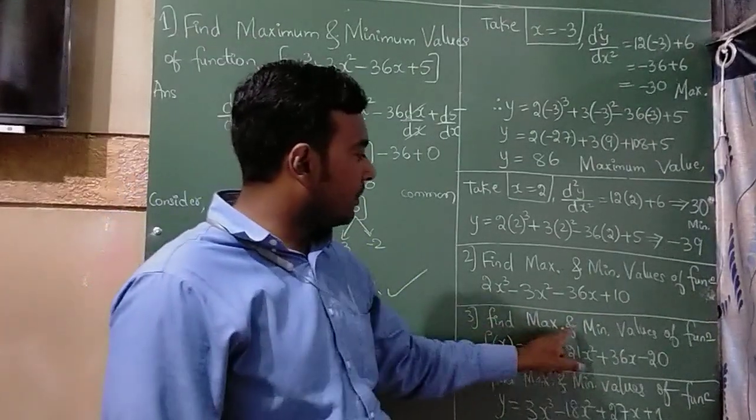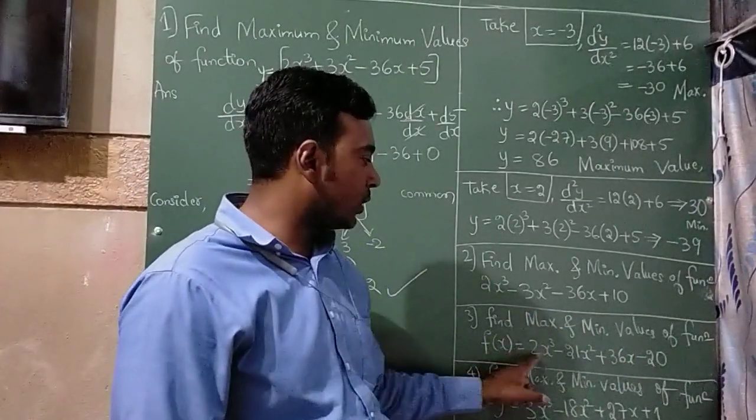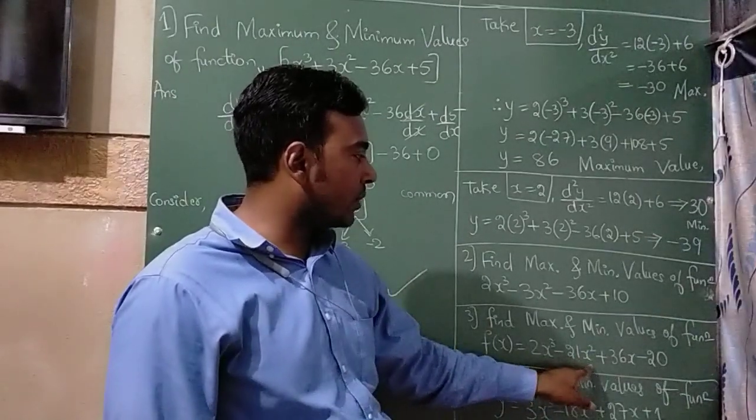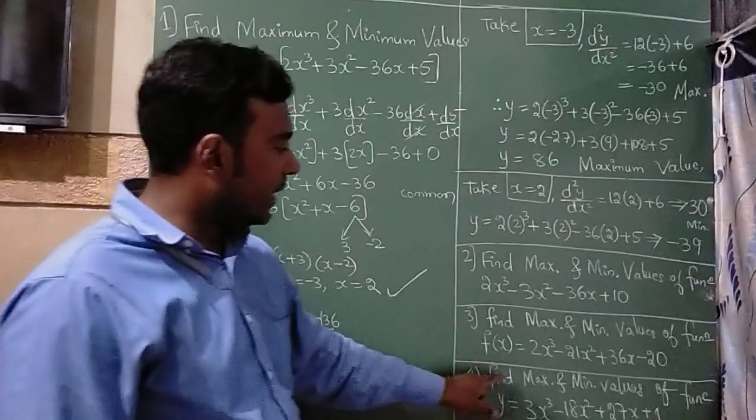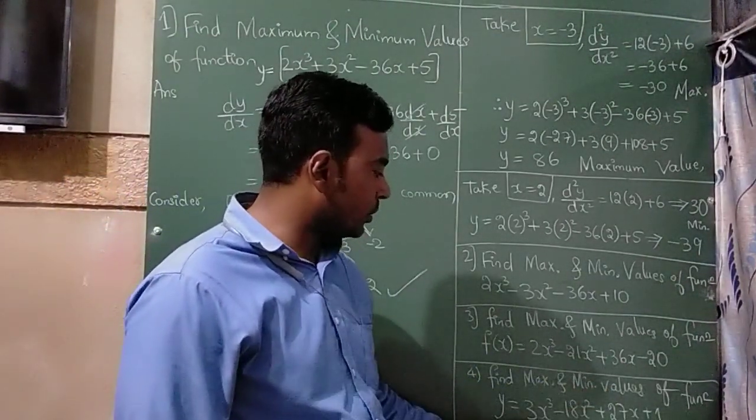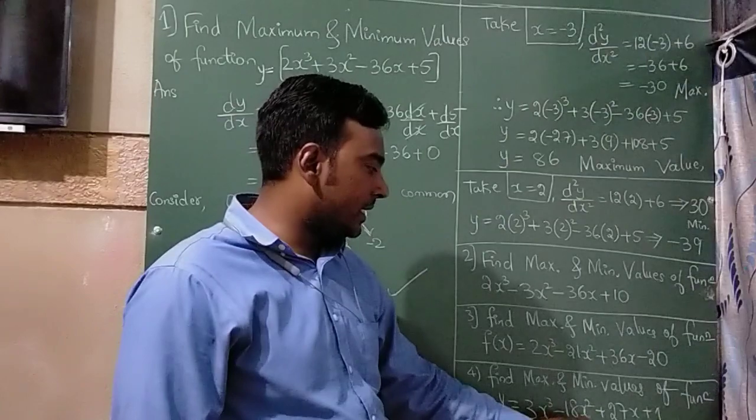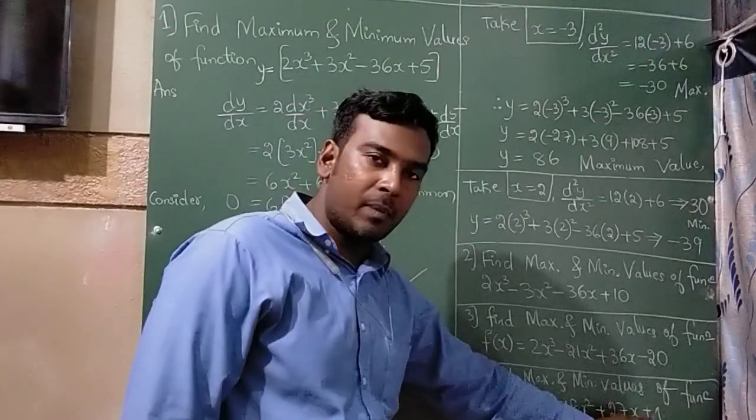And the third question is, find maximum and minimum values of a function f(x) = 2x³ - 21x² + 36x - 20. And the last question is, find the maximum and minimum values of the function y = 3x³ - 18x² + 27x + 1.